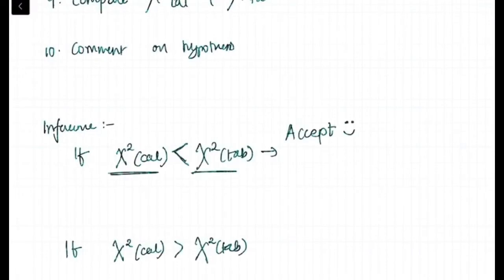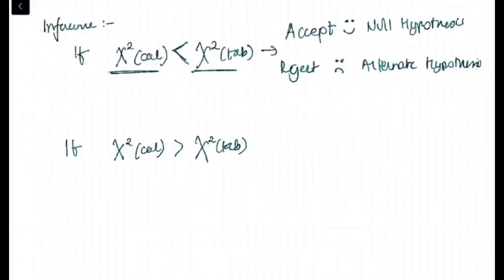Inference is if chi-square calculated is less than chi-square tabulated form, accept the null hypothesis and reject the alternate hypothesis. If chi-square calculated is greater than chi-square tabulated, then accept alternate hypothesis and reject null hypothesis.